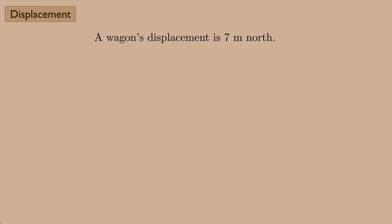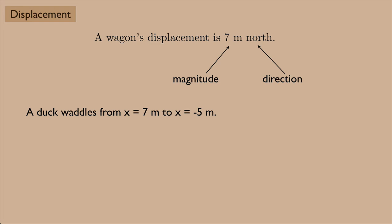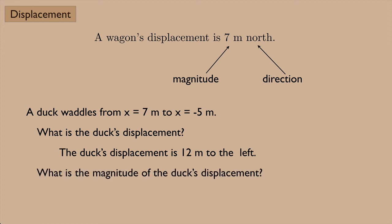So a wagon's displacement is 7 meters north. Well, the 7 meters, we would call that the magnitude. And the north, that's the direction. So our duck example here, the duck waddling from x equals 7 meters to x equals negative 5 meters. Well, the duck's displacement we saw is 12 meters to the left. The magnitude of the duck's displacement is just 12 meters without the direction.